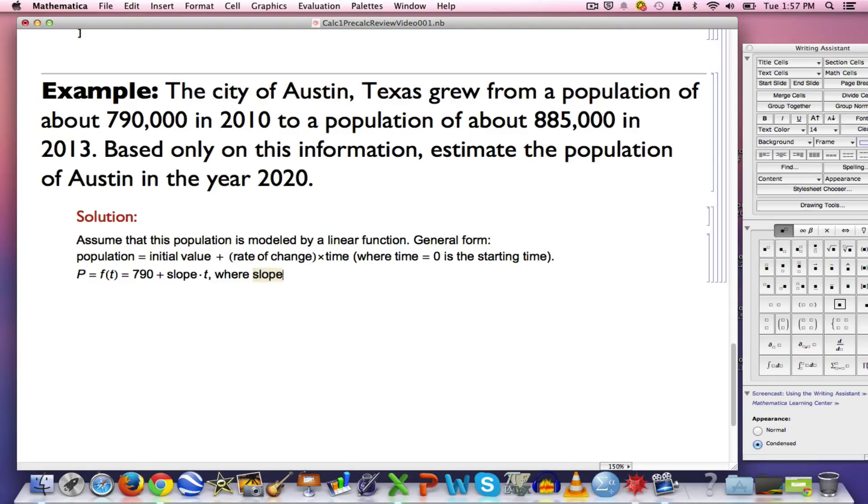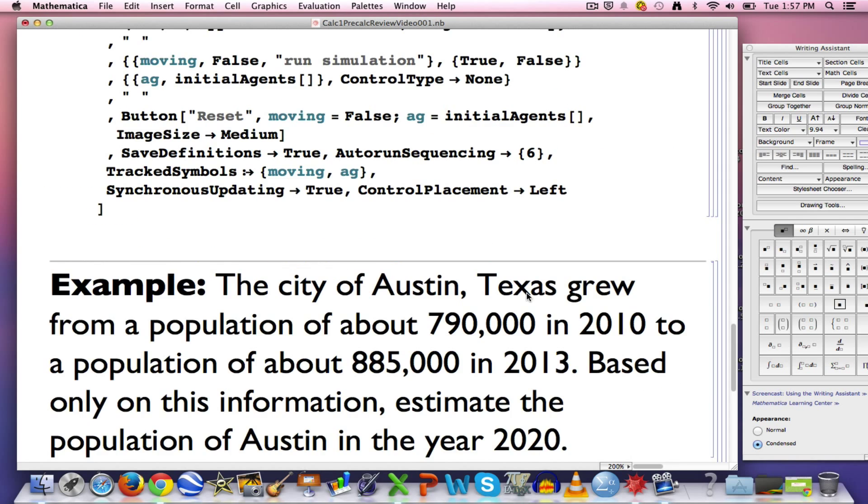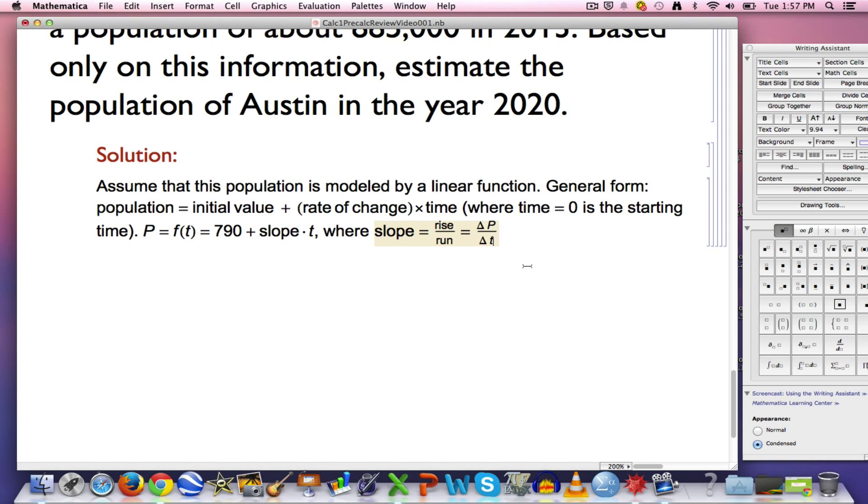The slope, hopefully you recall, is rise over run, change in P divided by change in T, and a common thing in math is to use a capital Greek letter delta, looks like a triangle there, to represent change in. Change in P divided by change in T, that is going to be a common kind of symbolic way to represent the slope.